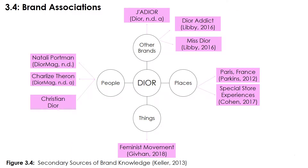Using Keller's secondary sources of brand knowledge model to find Dior's secondary brand associations, it can be seen that the brand links its name and character to all of its products and product lines. Dior is also associated with Paris in the minds of consumers, since it is one of the most iconic French brands, while it can be paired with the special store experience it offers. Its more recent association is with the feminist movement, since for the last two years the brand supported this cause with special dedicated products. Finally, the brand is linked with celebrities such as Natalie Portman and Charlize Theron, while it is highly connected with its founder and revolutionary designer Christian Dior.